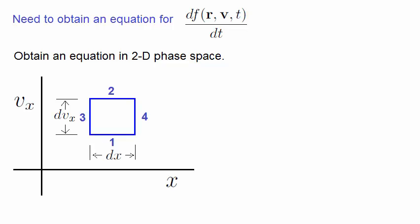Imagine we have our two-dimensional phase space. On the x-axis is real space, given by the variable x, and on the y-axis is the velocity space. In this case, it's the velocity along x. And our volume element has four faces, given by the numbers 1 to 4. The width along x is dx, and the width along y is dVx.